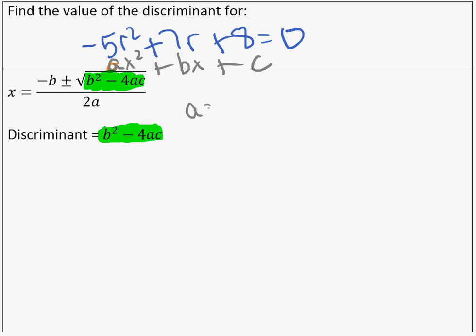So a, the coefficient of the x squared term, is negative 5. The coefficient of my bx term is 7, and my c constant value is 8.